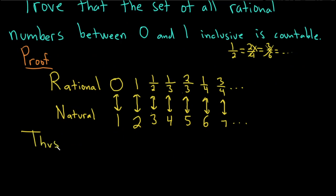So thus, we have a one-to-one correspondence between the set of all rational numbers between 0 and 1 inclusive and the natural numbers. So the result is proven. So the result is proven.